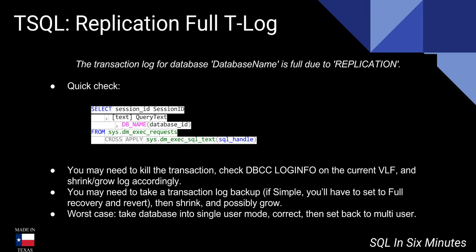That won't work in every situation — for instance, if the drive is completely out of space. That's an example of an architecture that should never happen. The replication transaction log — any transaction log on a database involved in receiving replication — should be at least two times greater than if the entire load came over.